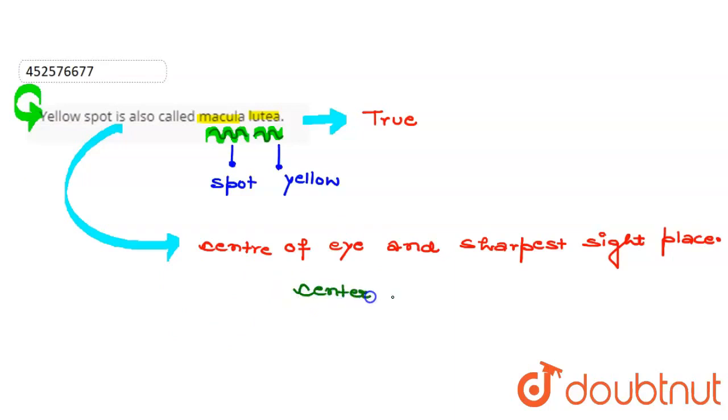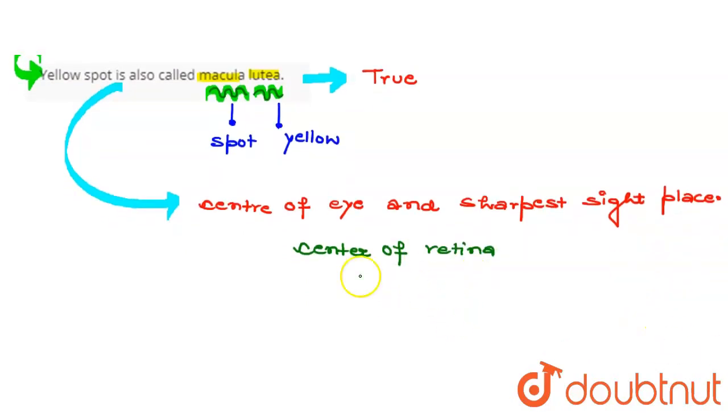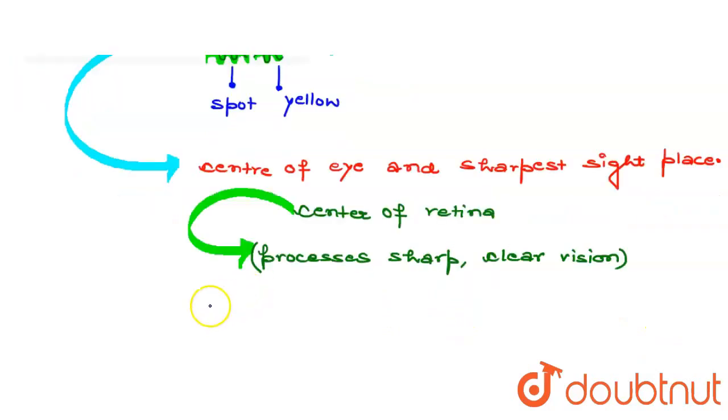And it possesses sharp, clear, straight-ahead vision. If we talk about photoreceptors, the photoreceptors present in this are rods and cones. Both rods and cones are present in this.